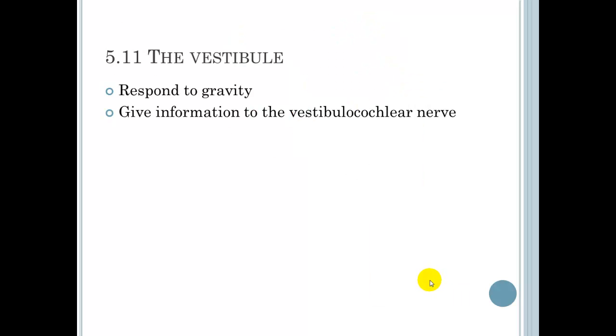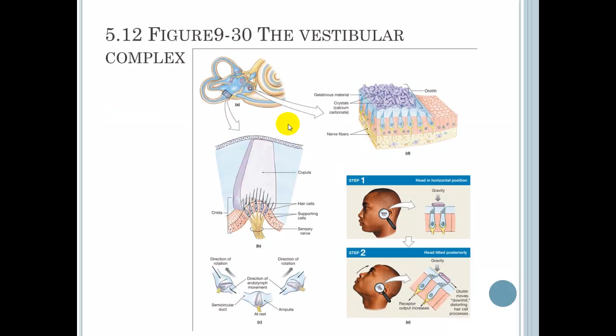5.11, the vestibule, responds to gravity, gives information to the vestibular cochlear nerve. This is going to respond to gravity. We're talking about pretty much sudden movements here. Movement of these little items here that are on top of these information sensors. These are those little hair-like. This will tell us direction and rotation as far as how the fluid is moving. If the fluid moves this way because of a quick jerk the other way, or vice versa, it sends information to our brain from the movement of these hairs.